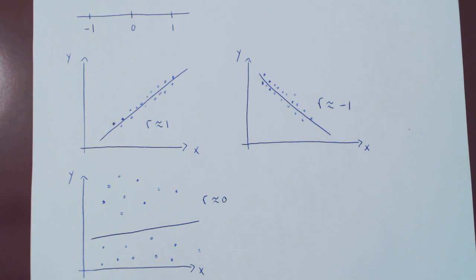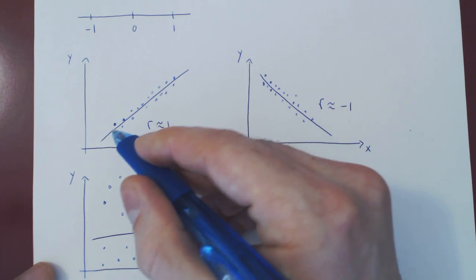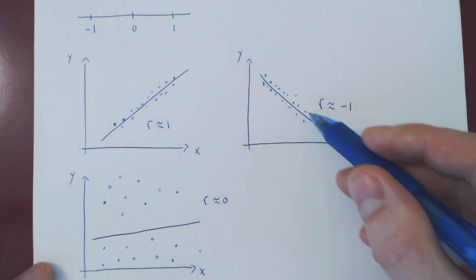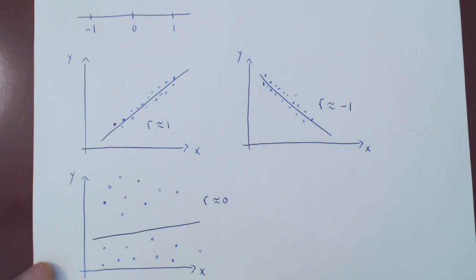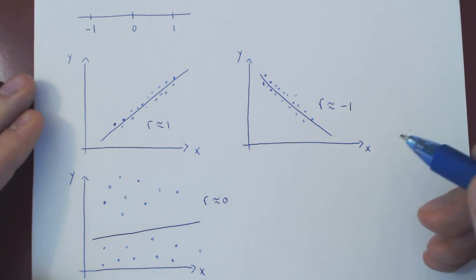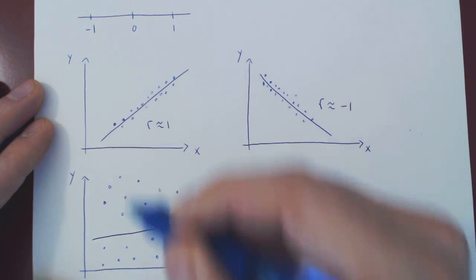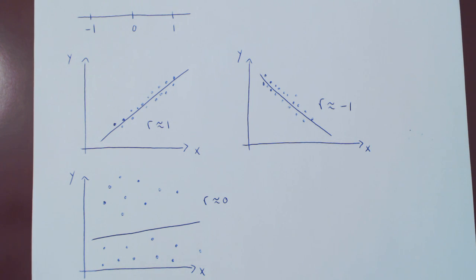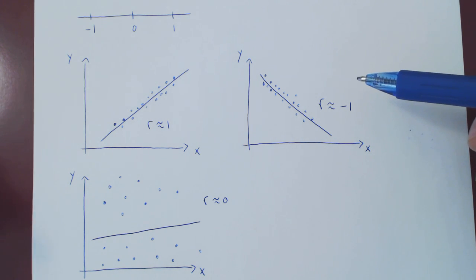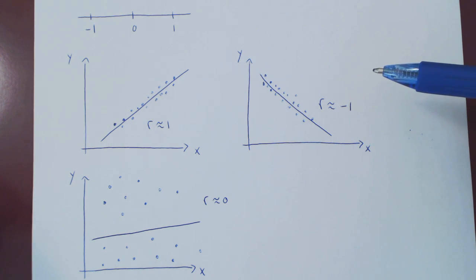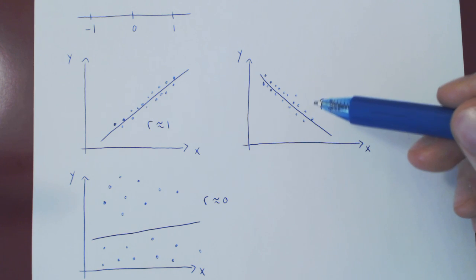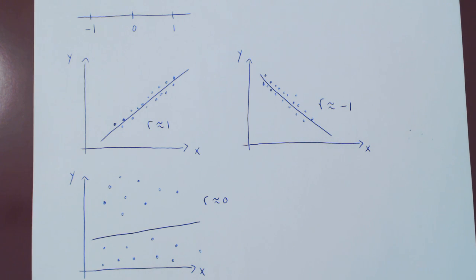So we now have our two key objects when we have a set of data pairs from two variables: the line of least squares — the equation of the line passing through the scatter diagram closest to the points on average — and the coefficient of correlation, a measure of how good the linear relationship is between x and y. The only question now is, given an actual set of data pairs, how do you compute the line of least squares and the coefficient of correlation? This will be the topic of our next video, where we'll work through an example.